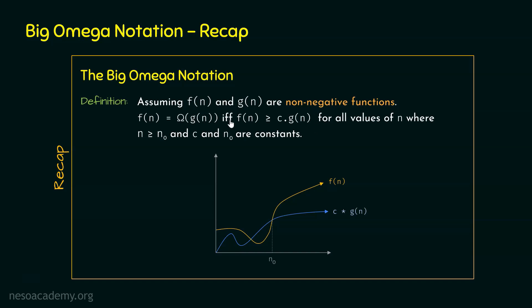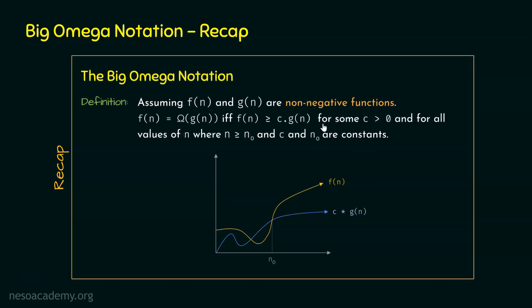Within this definition, Gn is multiplied by some constant C, which must be a positive constant — C must be greater than 0. Also, this inequality must be true for some C. It is not mandatory to check for all positive constants; we can take some positive constant C and check whether the inequality is satisfied. It is important to mention that this inequality must be true for some C greater than 0, because it will play a crucial role in understanding the little omega notation.